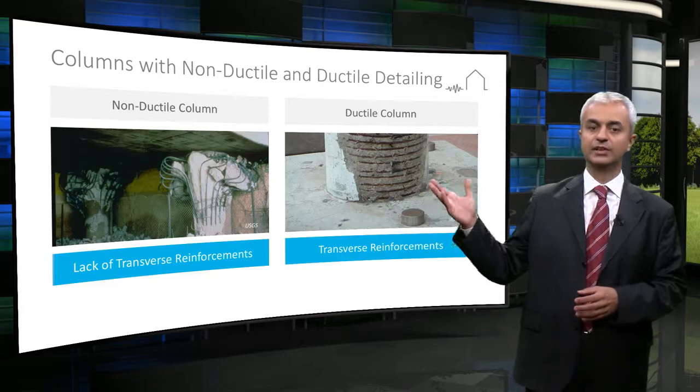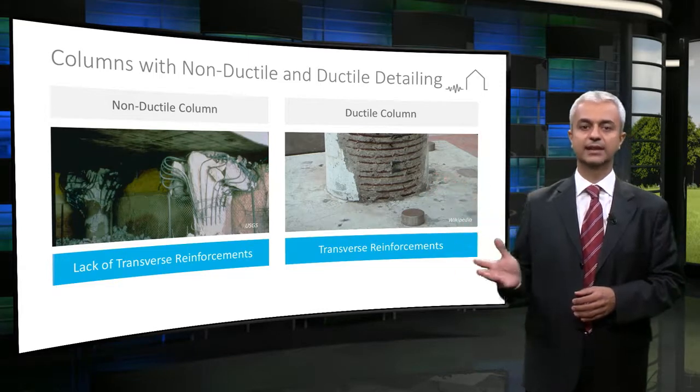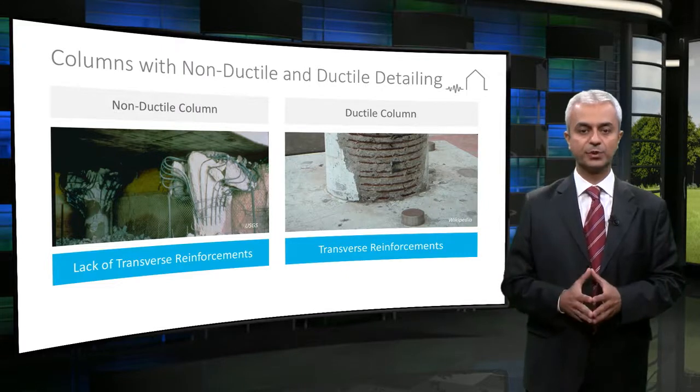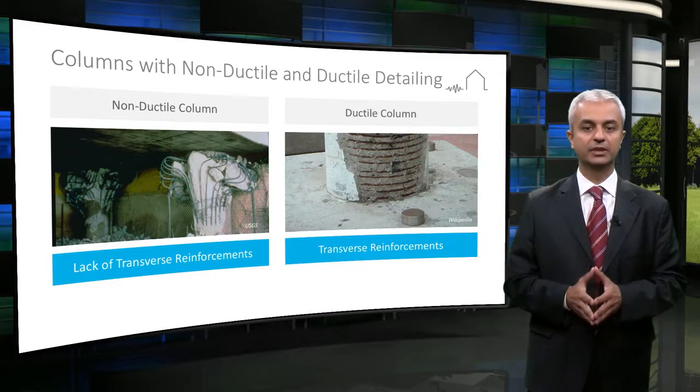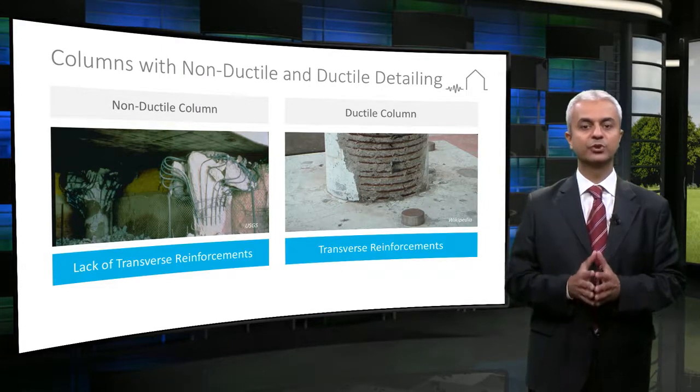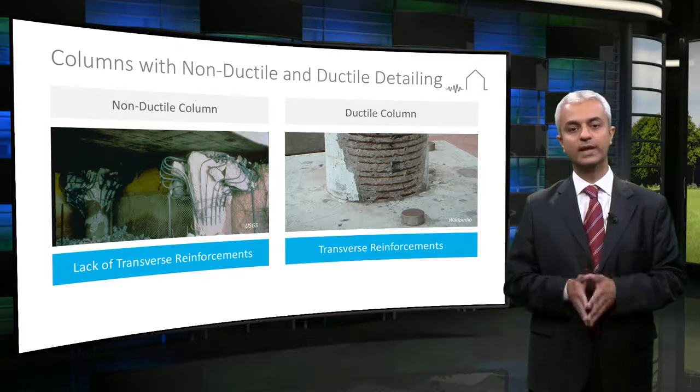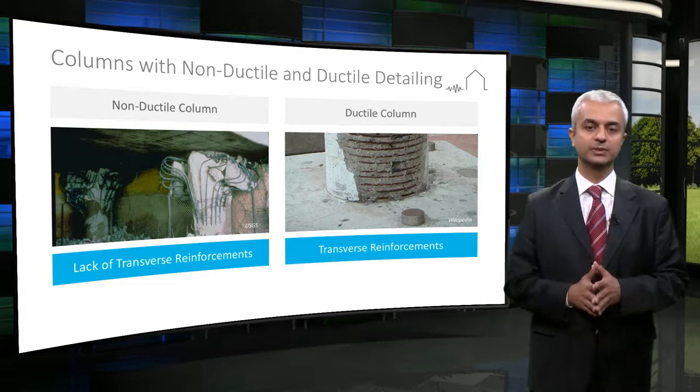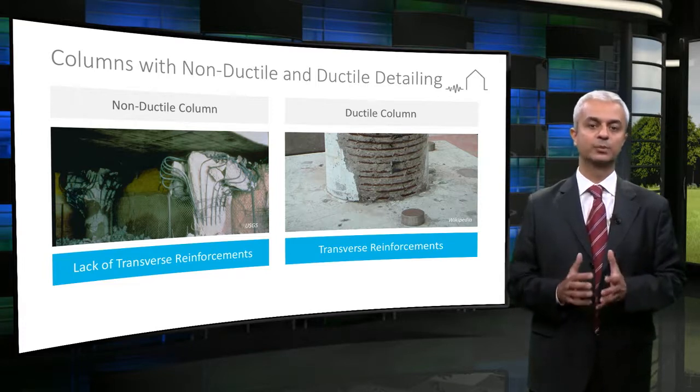These pictures show non-ductile and ductile columns after earthquakes. The member on the right is properly detailed for ductile behavior and experienced controlled damage, whereas the one at left had extensive damage due to lack of transverse reinforcement, or in other words, improper detailing.